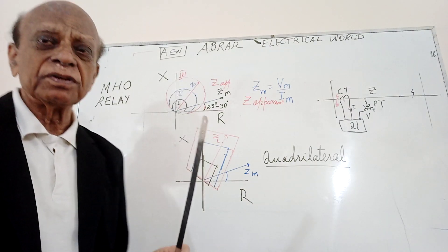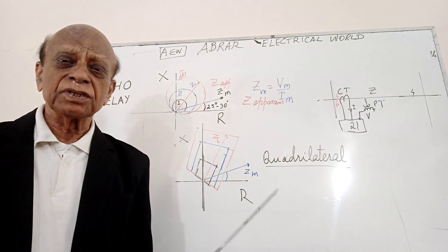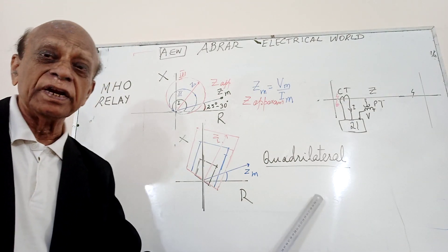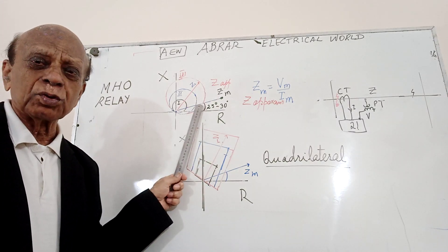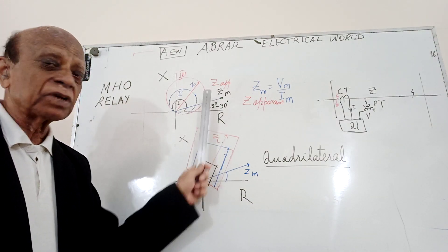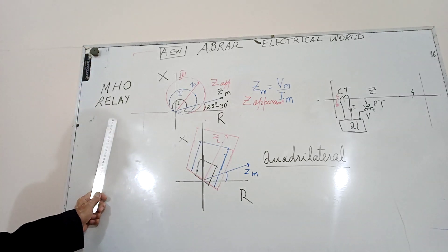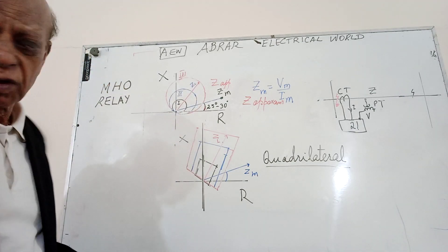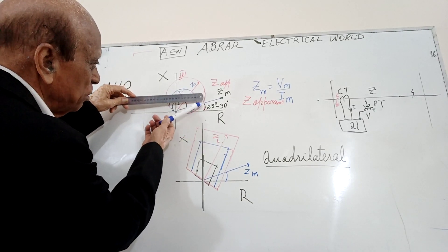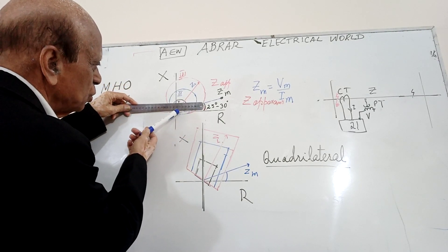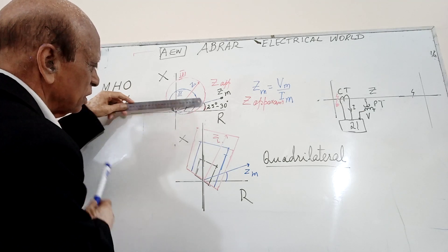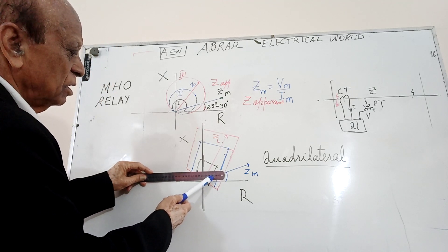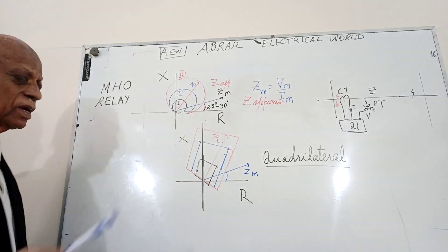I have explained this in various videos, and various types of characteristics are used. This is another kind of characteristic known as the quadrilateral — it is a quadrilateral shape. This is a circular one, a circle passing through the origin. This is a variation known as the Moh relay. If you look at the distance here, the point where Zm touches the red circle is right here — up to about seven millimeters on this scale — and now it is only four millimeters when it touches the outer zone.